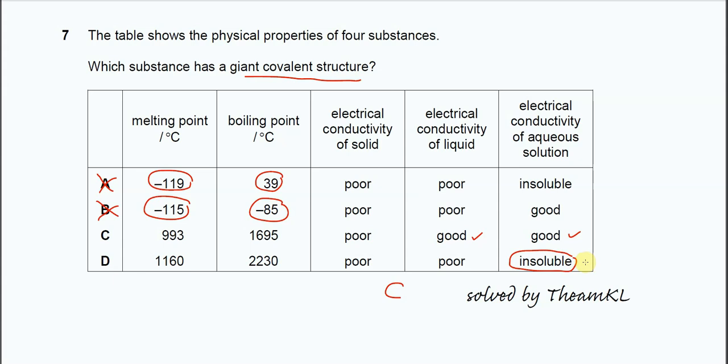Of course, like these carbons, the graphite or the diamond, also insoluble. Therefore, it's quite clear that the answer is D. The compound D has a giant covalent structure.